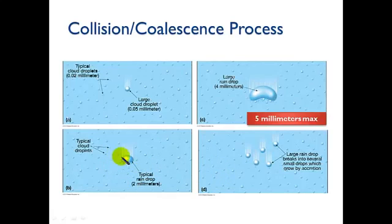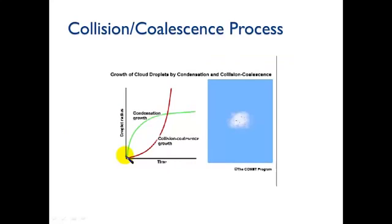And the coalescence occurs partly because of the electrostatic charge of the different water droplets. If we just relied on condensation growth, so this is droplet radius with time, if we just relied on condensation growth, those droplets wouldn't get big enough. And so we need that collision and coalescence process to make the droplets grow big enough that they can fall to the ground without evaporating before they hit the ground.